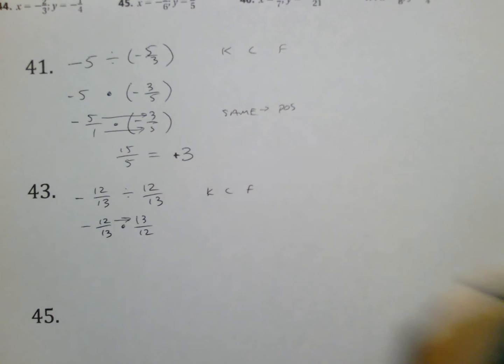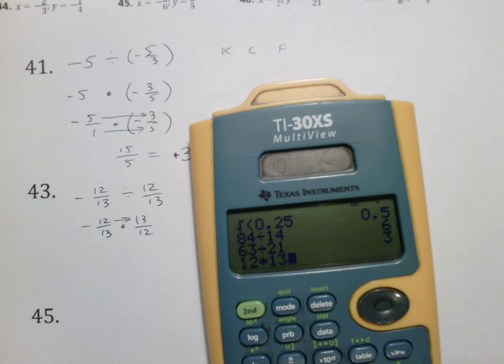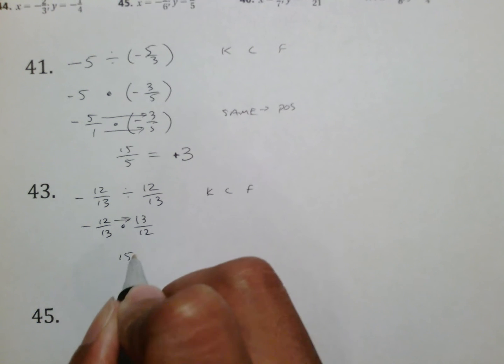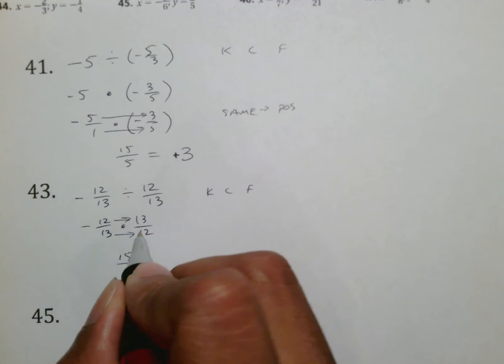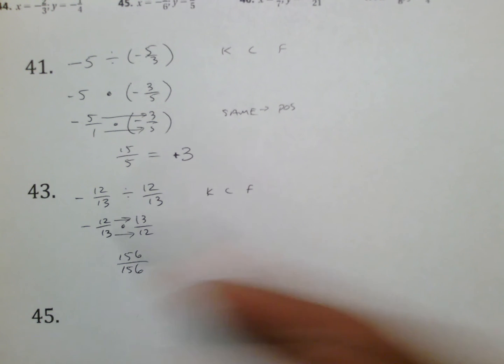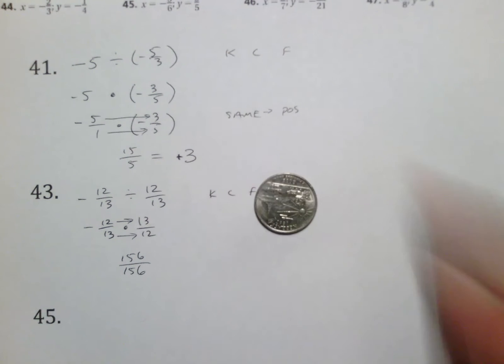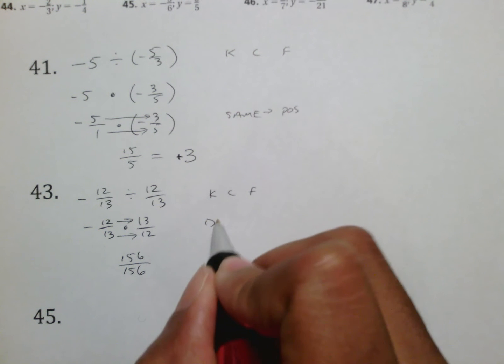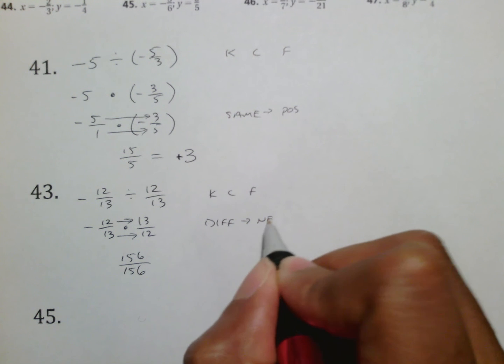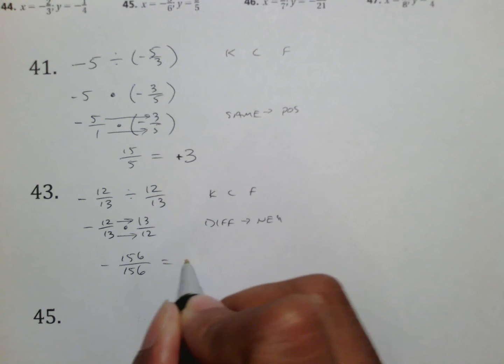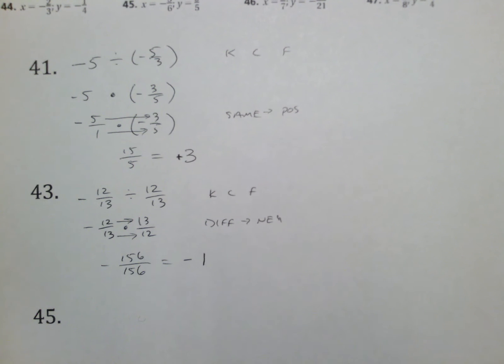Now that we have our answer, 12 times 13 is 156 over, well, 13 times 12 should be the same as 12 times 13, which is 156. There is only one negative, so if you're talking about the coin, one negative means the coin flips once, making it negative. Or you could say the signs are different, and so it should be negative. And then in the end, 156 divided by 156, any number over itself is going to be 1. So your answer there would be negative 1.